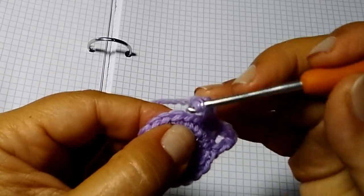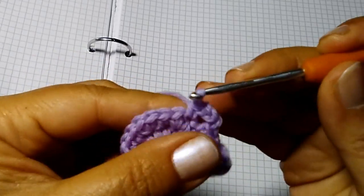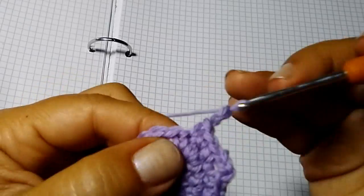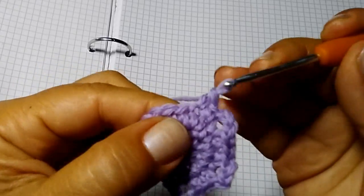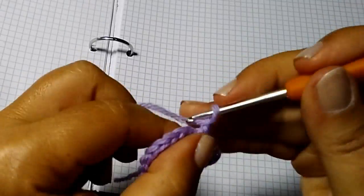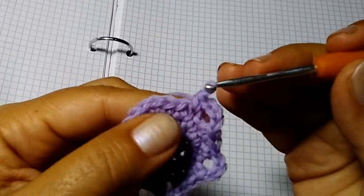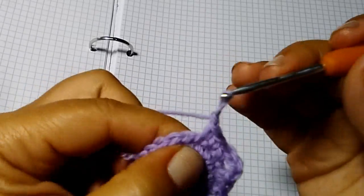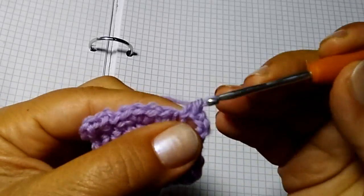E ripeto: 3 maglie basse nelle prossime 3 maglie: 1, 2, 3. Di nuovo 3 catenelle. 3 maglie basse: 1, 2, 3.